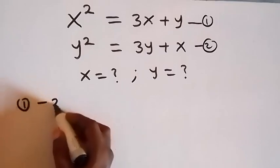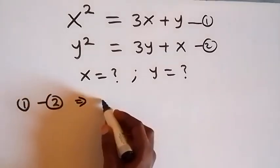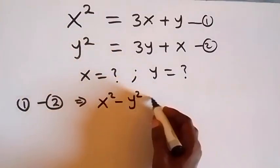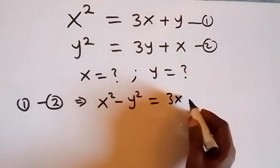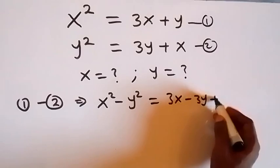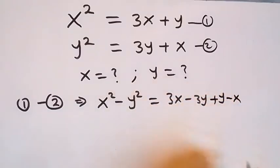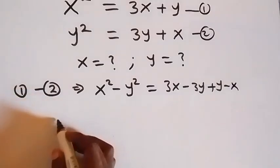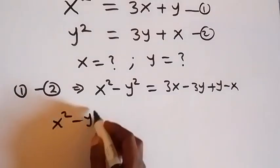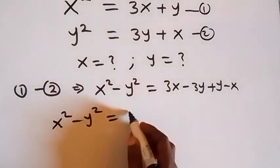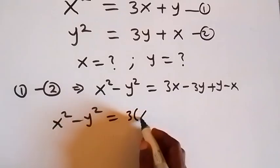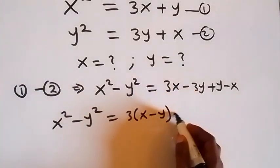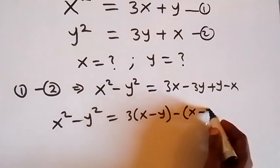Equation 1 minus equation 2 gives us x squared minus y squared on the left hand side, which equals 3x minus 3y plus y minus x on the right hand side. We can write the right hand side as 3 into bracket x minus y, then minus into bracket x minus y.